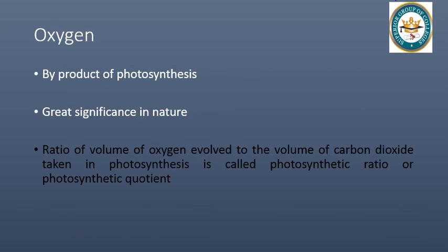Next is oxygen. Oxygen is the end product of photosynthesis and has great significance in nature. Oxygen is important for our environment — if more oxygen is present in the environment, it will be friendly and beneficial for us. Therefore, it is important that the photosynthesis process occurs effectively in our environment.